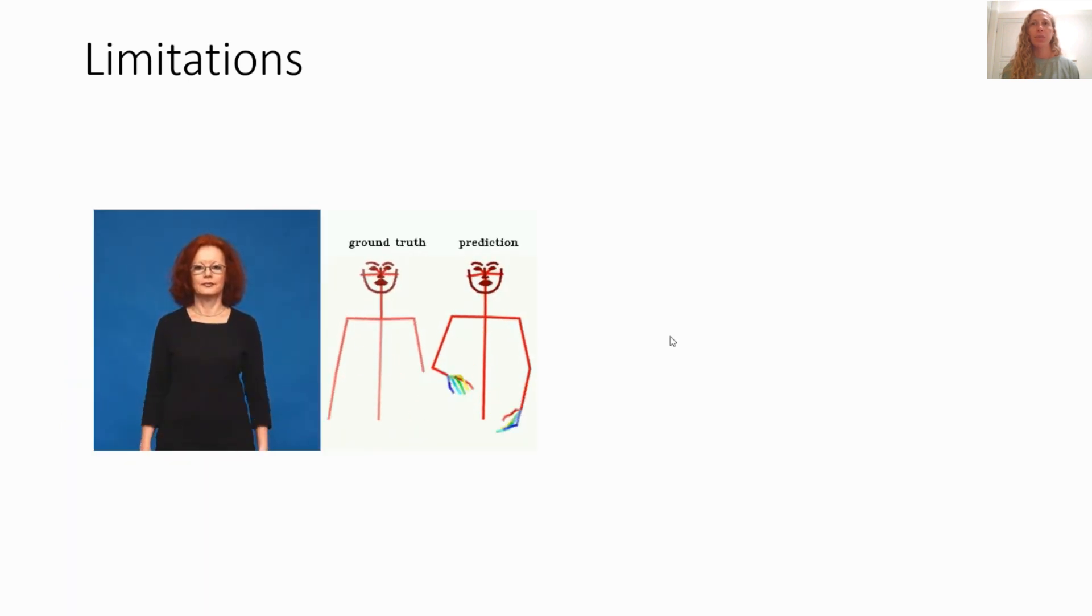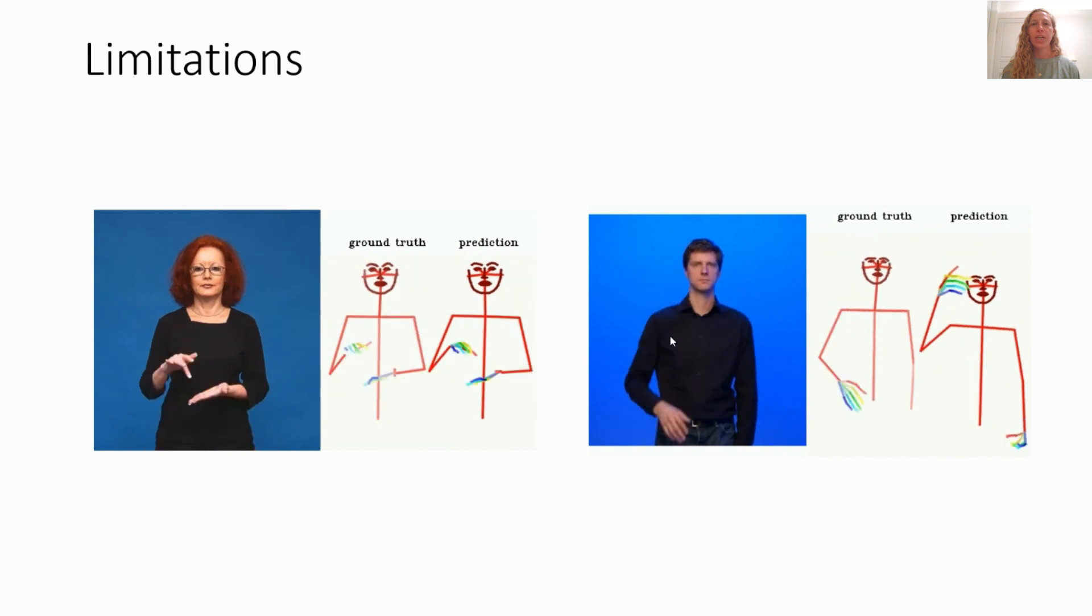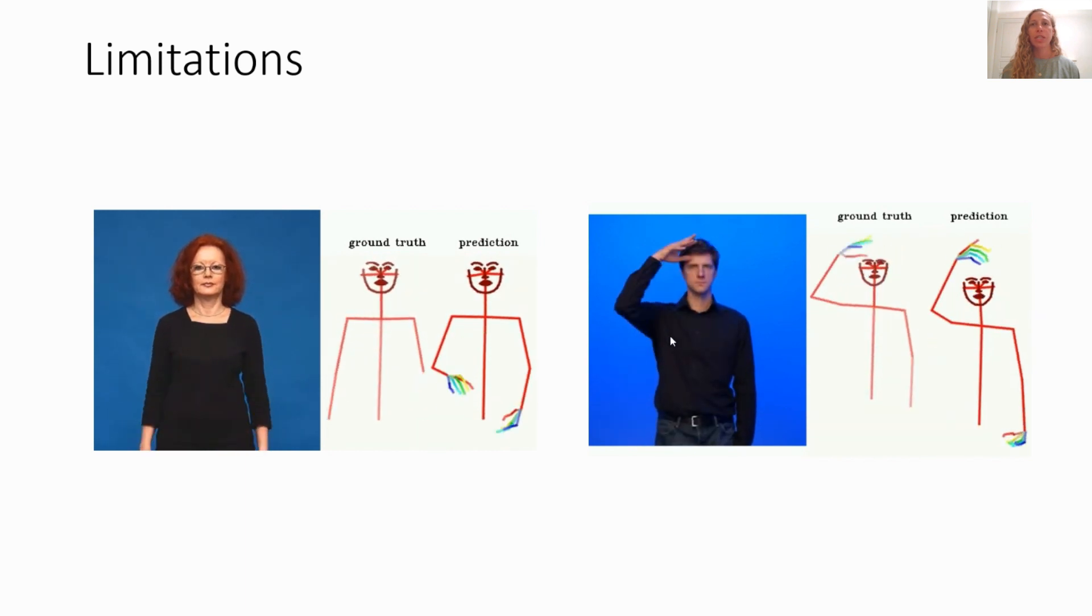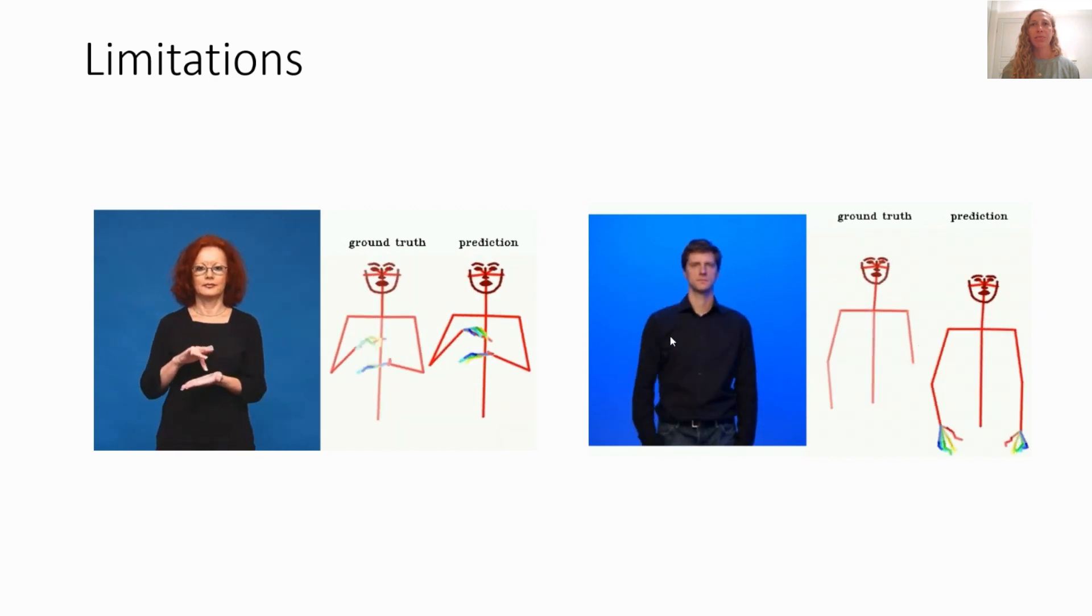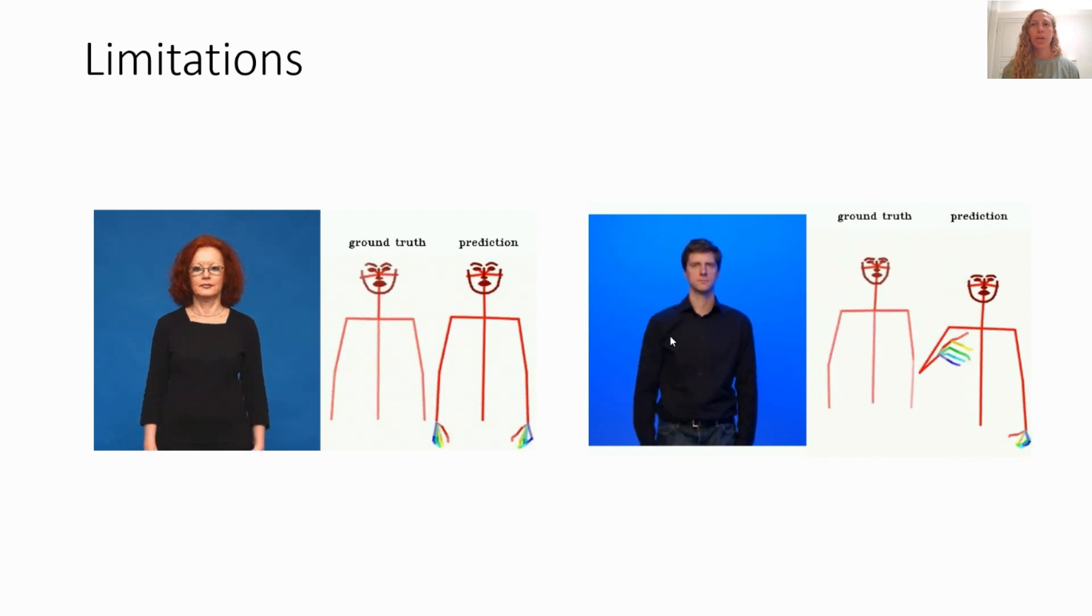Another limitation is when the motion is a challenging case for OpenPose. For example, when the HamNoSys calls for the hands to connect, the similar skin tones and occlusions confuse OpenPose. Also, when the motion is fast, tracking is degraded. For such cases, the training data isn't good enough for the model to learn the correct motions or hand shapes to produce.